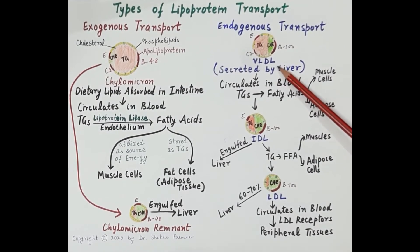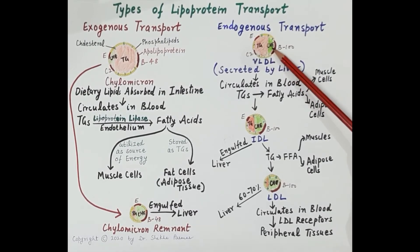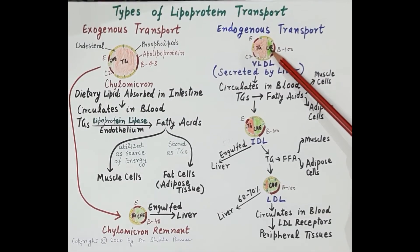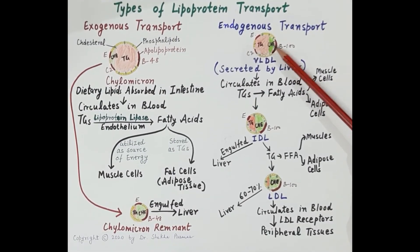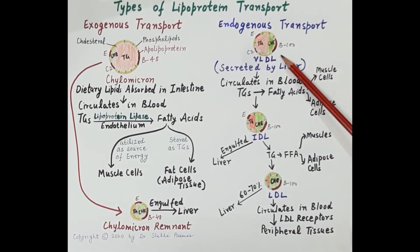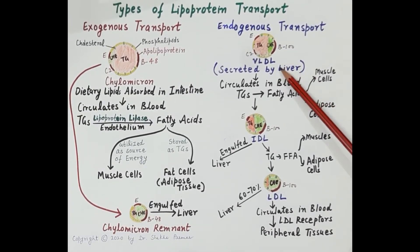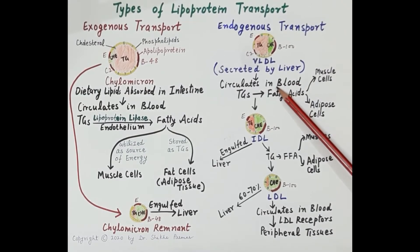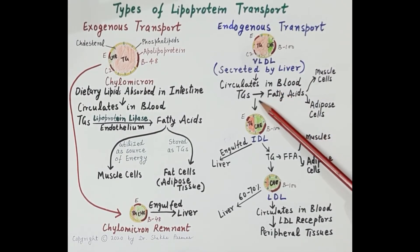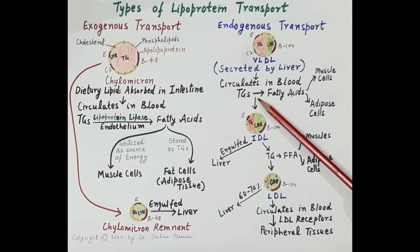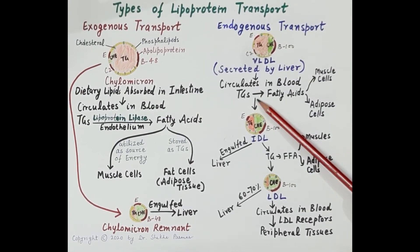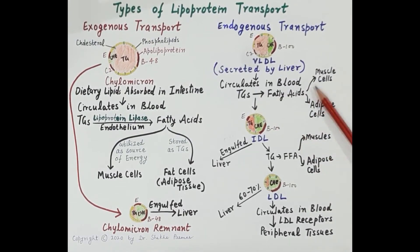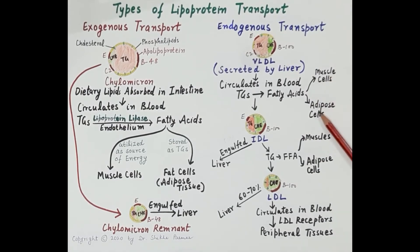VLDL — very low density lipoproteins — are the lipoproteins synthesized by the liver. VLDL consists mainly of triglycerides, shown in red, and small quantities of cholesterol esters. The diameter of VLDL is about 40 to 80 nanometers. VLDL circulates in the blood, and again endothelium-bound lipoprotein lipase hydrolyzes its triglycerides to fatty acids.